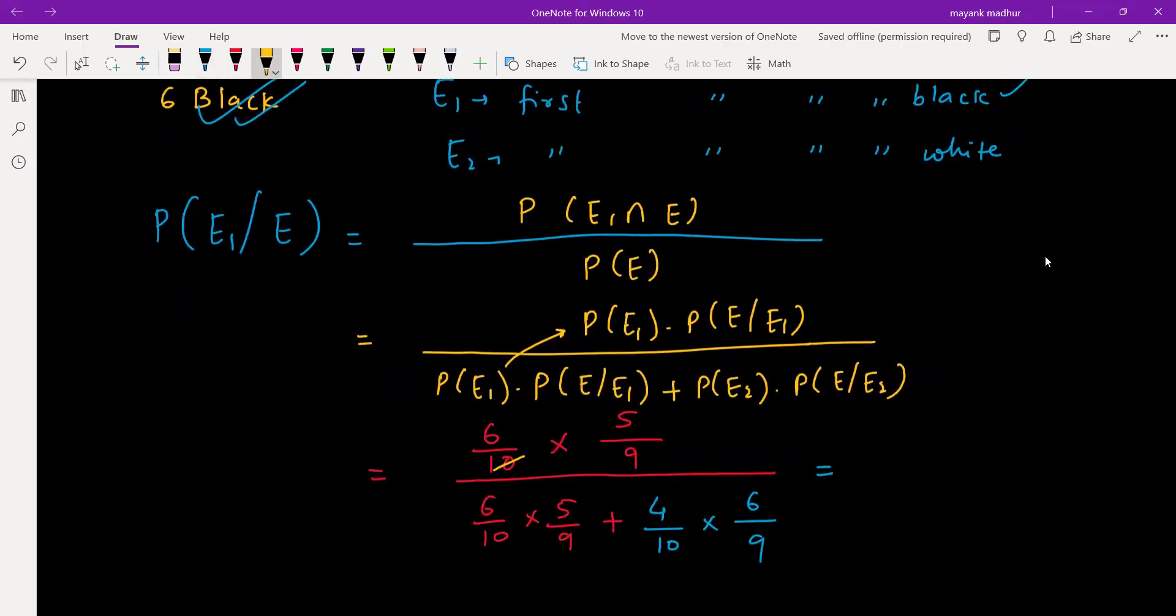So ten, nine you can cancel throughout. You get, six also you can cancel. Six is cancelled from here. So five by five plus four which is five by nine.